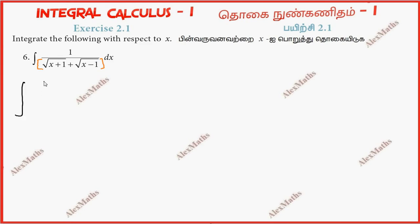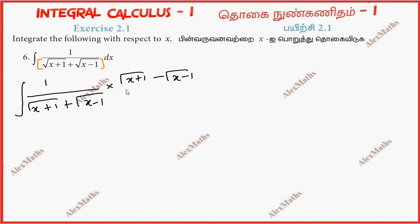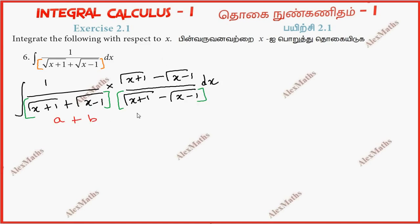So if you have the term, the first question is to copy the answer. If you have a conjugate, change the middle sign. So if you have the middle sign, change the root of x plus 1 minus root x minus 1, whole divided by root of x plus 1 minus root x minus 1, dx. If you have the term, this is the a plus b into a minus b formula. So a plus b into a minus b gives a square minus b square.